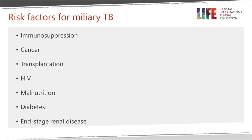Risk factors for miliary TB: we've mentioned HIV as a cause of immunosuppression, but cancer, immunosuppression to reduce rejection in transplantation, malnutrition, diabetes, and renal disease can all give you enough immunosuppression to let miliary TB get a hold.